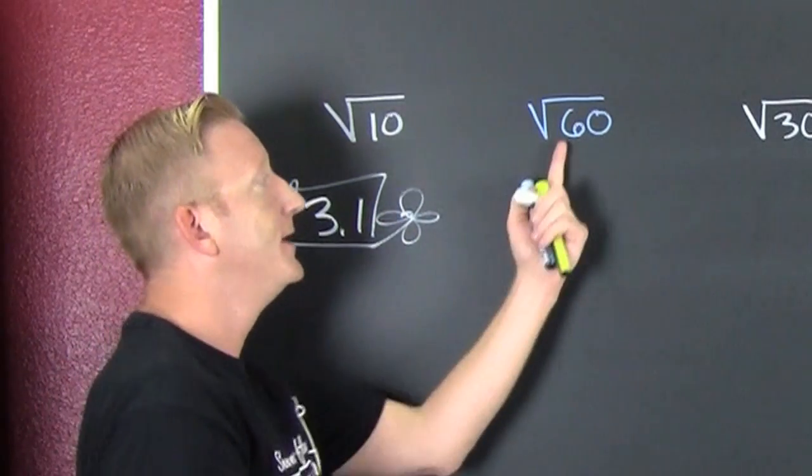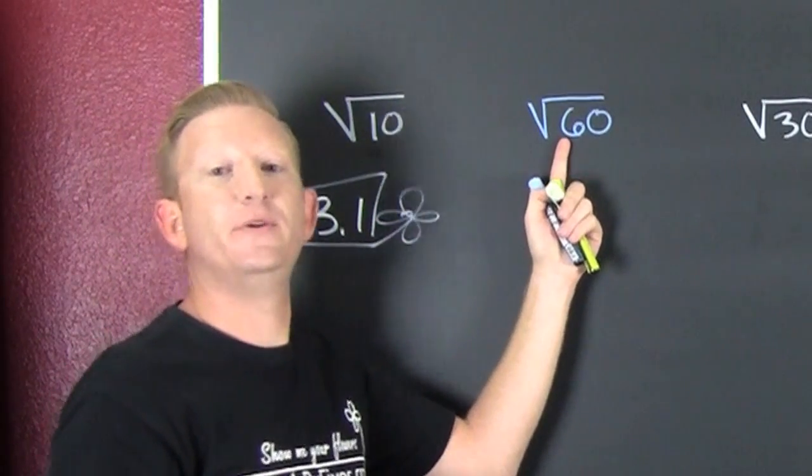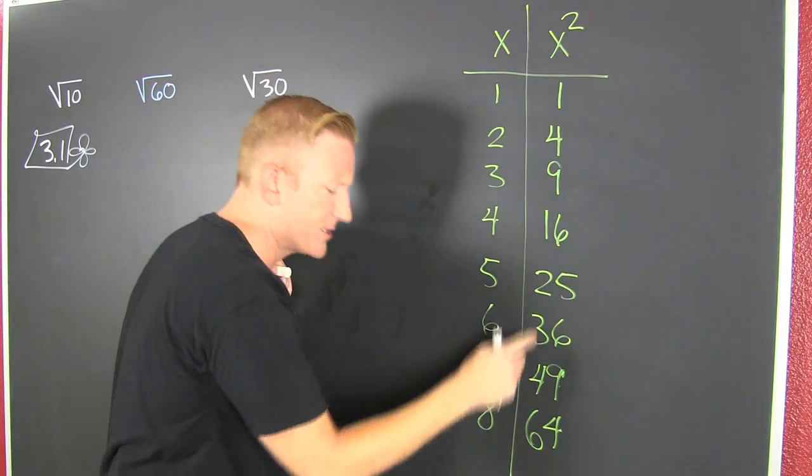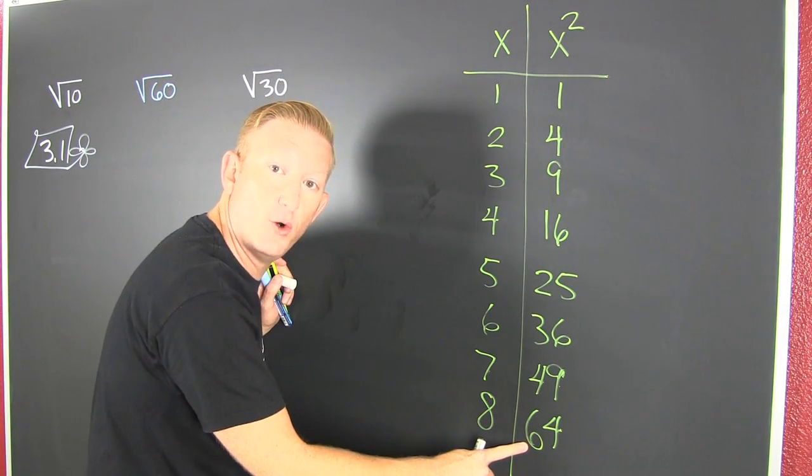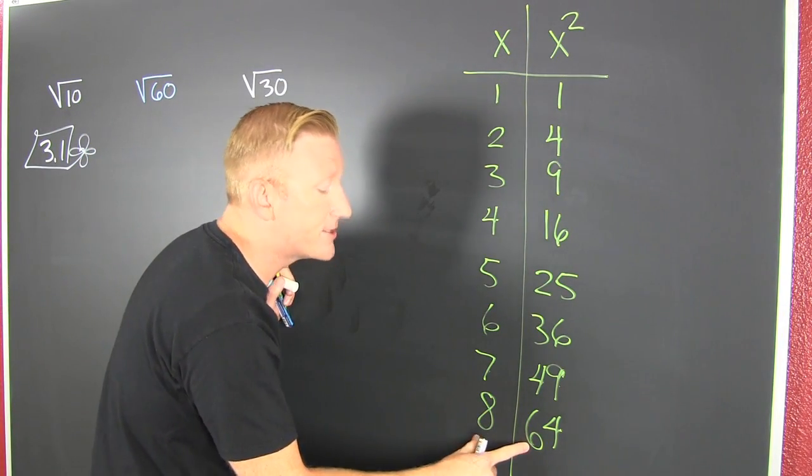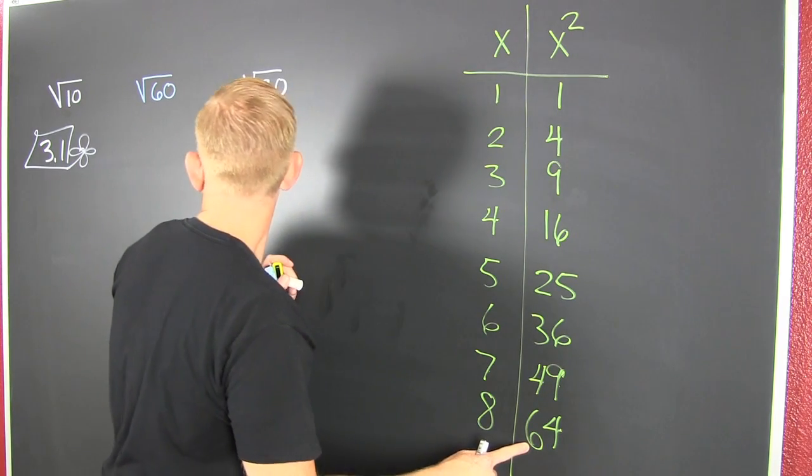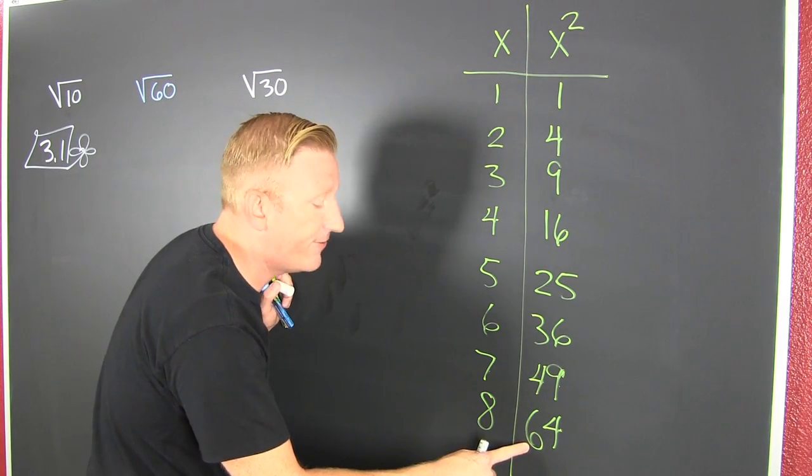Oh boy. So then we look at the square root of 60 and we try to find a number over it that's close to 60. 64 is close to 60. So the square root of 60 is gonna be close to the square root of 64.